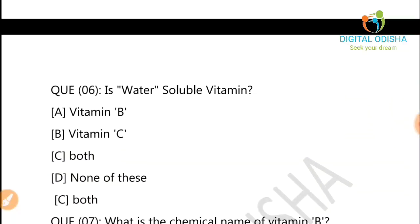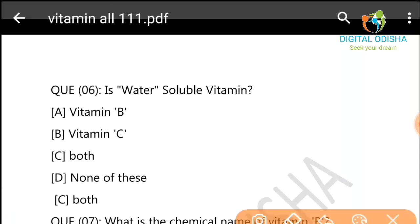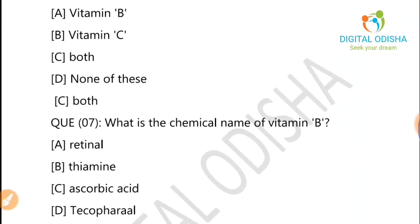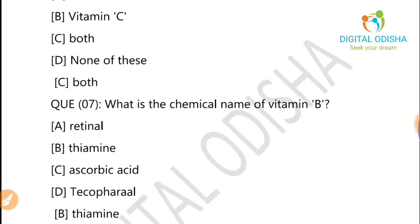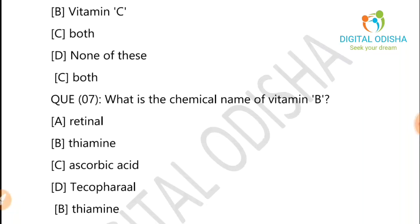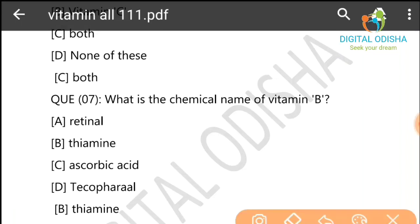Vitamin B and C are the water-soluble vitamins. What is the chemical name of Vitamin B1? The answer is thiamine. The chemical name of Vitamin A is retinol, Vitamin B1 is thiamine, and Vitamin C is ascorbic acid.